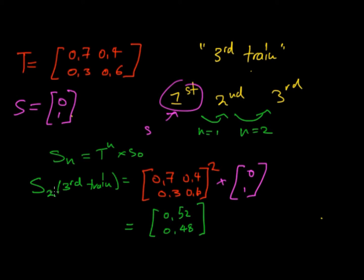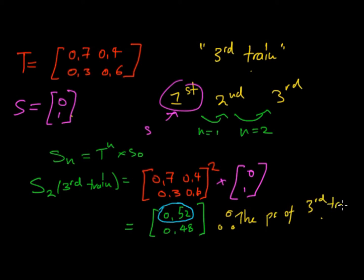The result tells us the probability of the third train being on time is 0.52, or 52%, and the chance of it being late is 0.48. So the probability of the third train being on time is 0.52. Remember the key steps: use the formula, set up the transition matrix, identify the initial condition, then substitute those values.